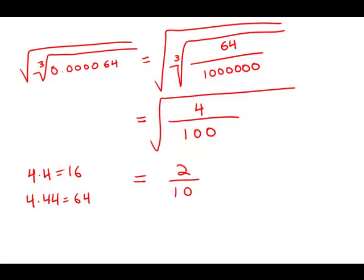And so we get the fraction 2 tenths, which we can write back as a decimal point 2. And this is answer choice E.